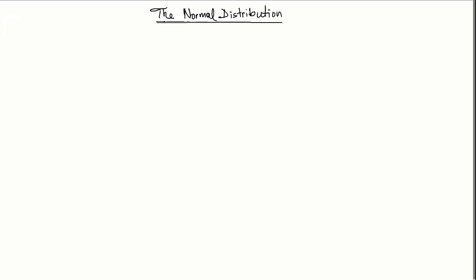In this lesson, we will show or lay out the probability density function of the normal distribution and a special case of it, which is called the standard normal distribution. We will derive its expectation, variance, and moment generating function.